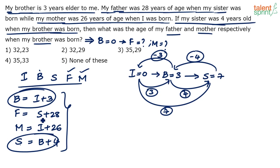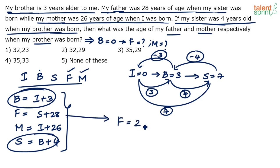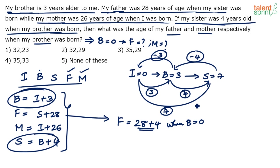Father was 28 years old when sister was born. Brother was born 4 years later — after sister, not before. So when brother was born, father's age was 28 + 4 = 32. When sister was 0 father was 28, so when brother was born (4 years after sister) father was 32.